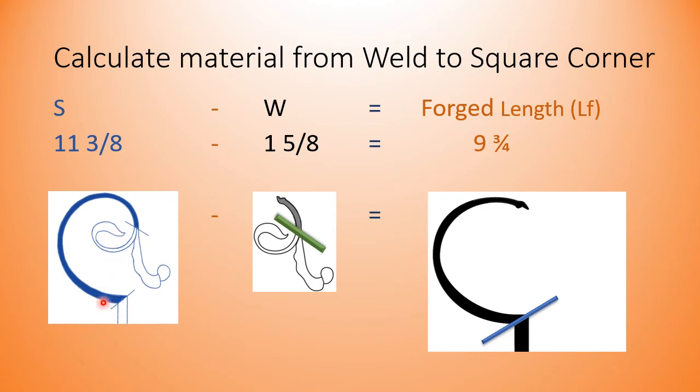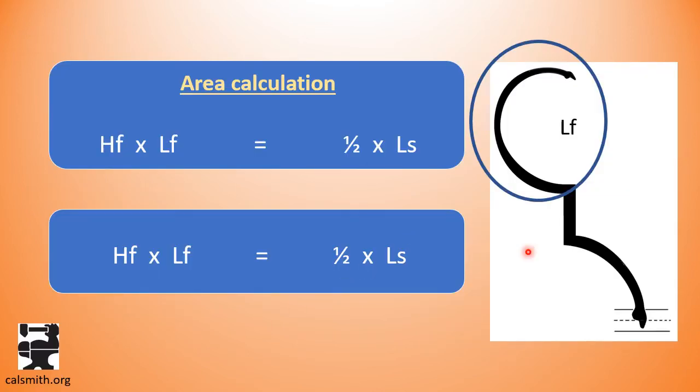We know that the entire scroll is eleven and three eighths or whatever your measurement is. Subtract the welding allowance that you created when you started your leaf scroll assembly and you'll get the forged length needed from the upset corner to the scarf. In this case, it's nine and three quarters. Let's plug that in.